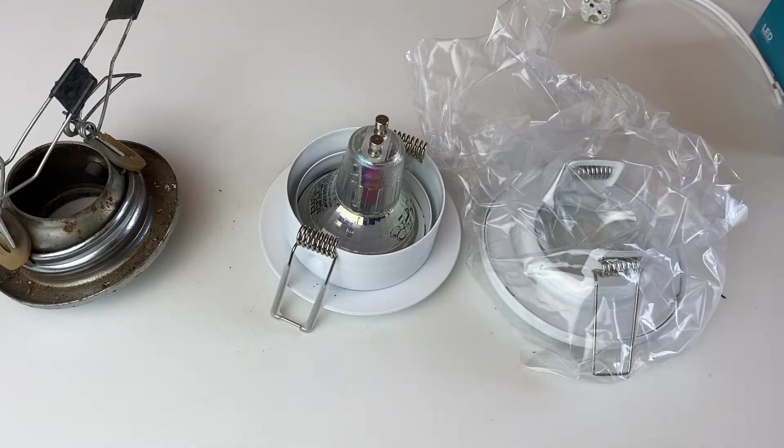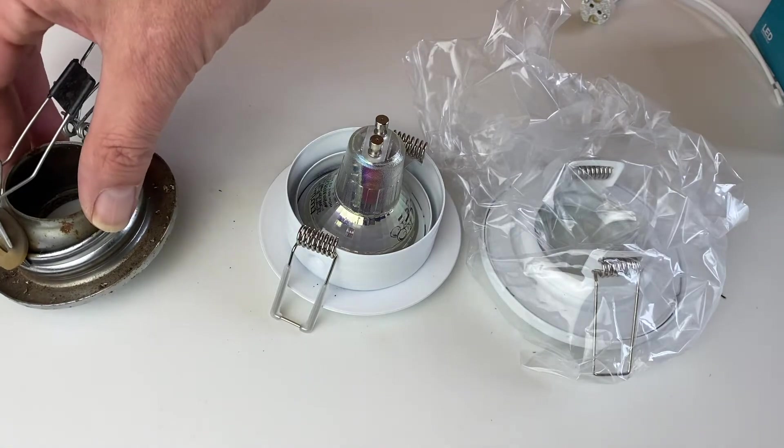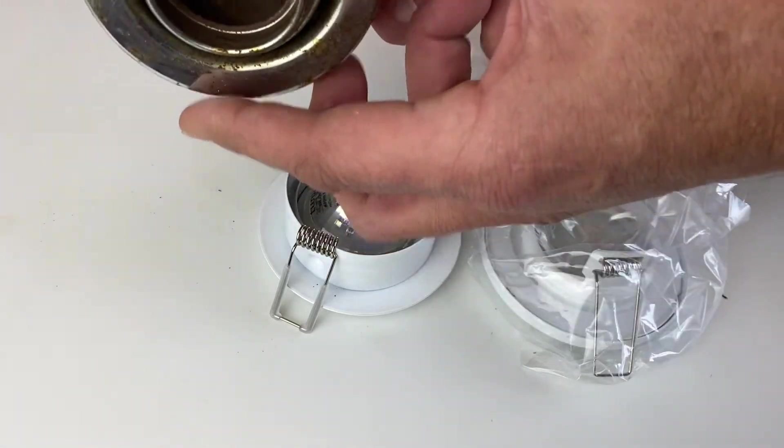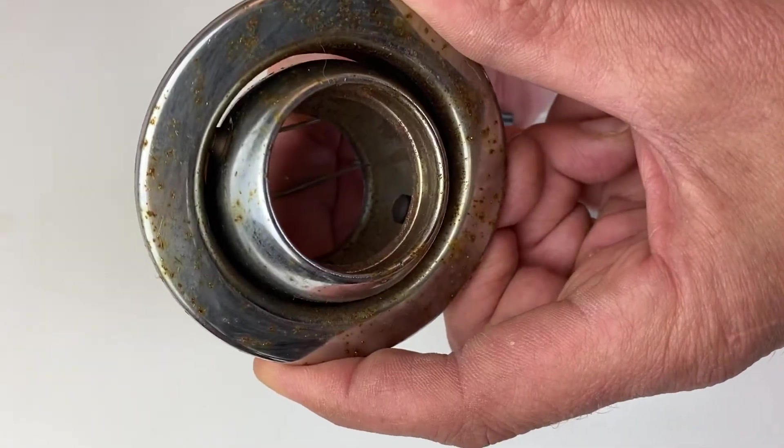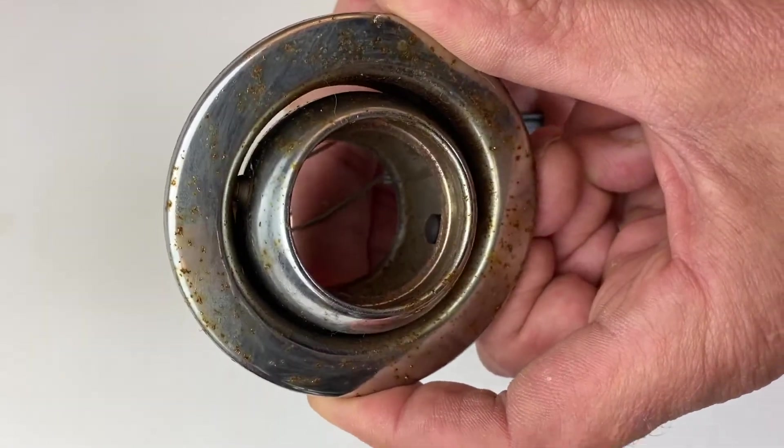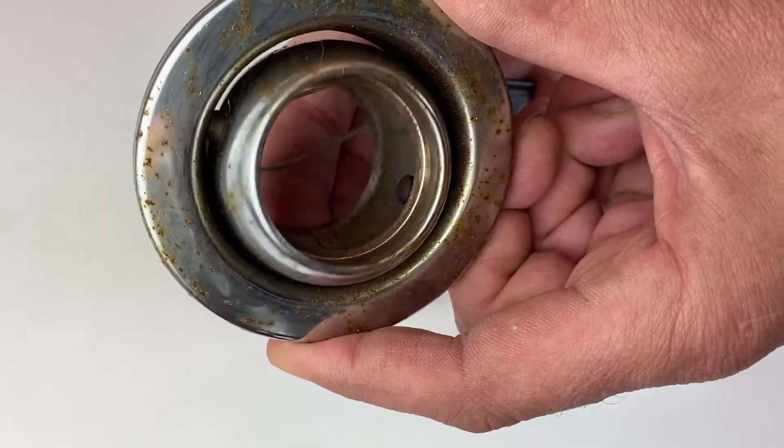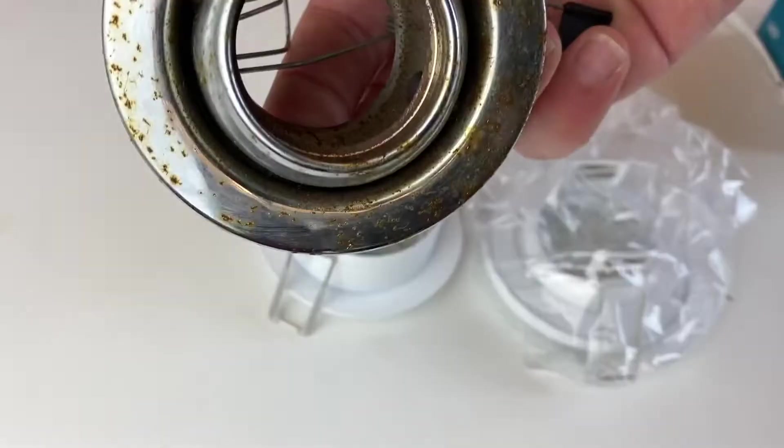So the first thing you can notice is there are some models which enable a slight orientation of the spotlight. You see here these are the previous spots I had and there's an inclination possibility at 180 degrees.